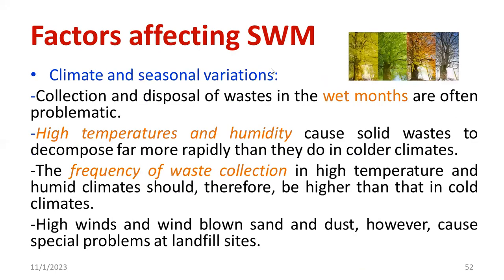Next, let's talk about climate and seasonal variation. There are different types of climate in the world — winter, autumn, summer, etc. For example, during the monsoon season, wet waste content is more, while during summer, dry waste is more.